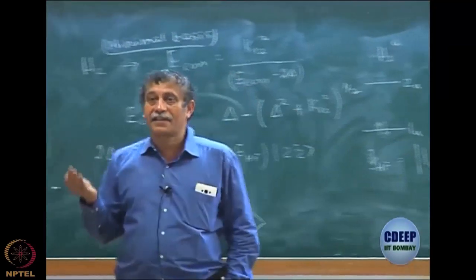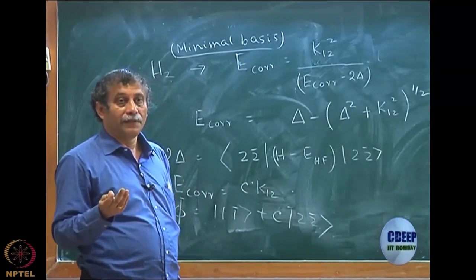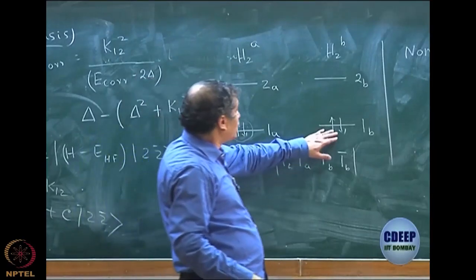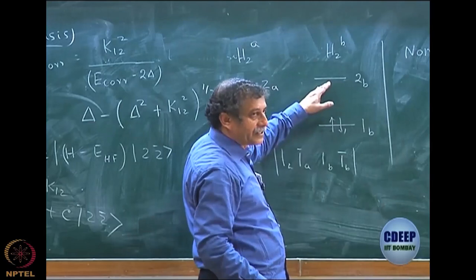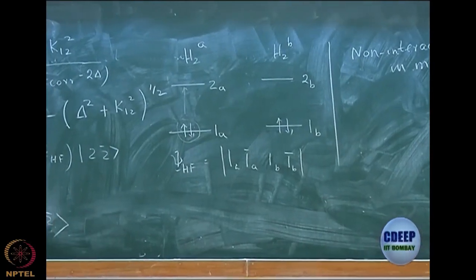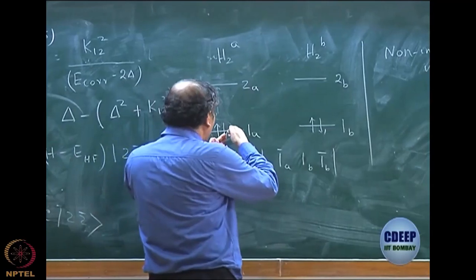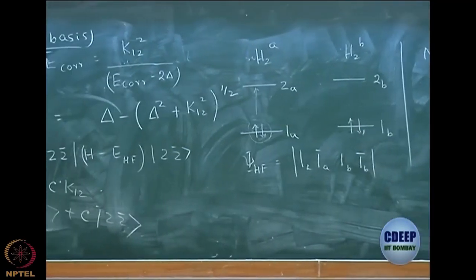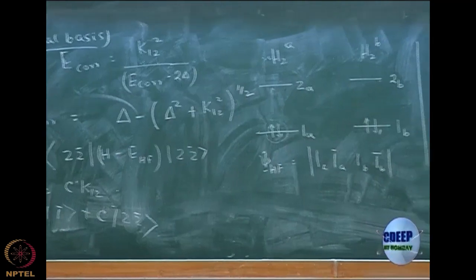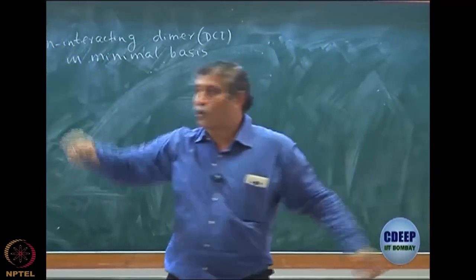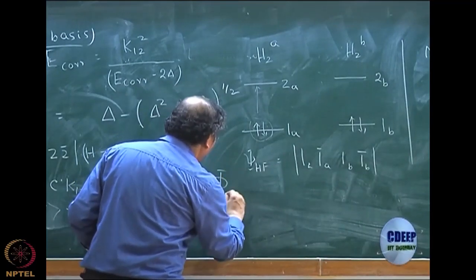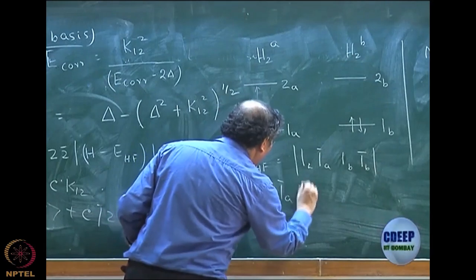Now I have to discuss what are the doubly excited configurations. How many doubly excited configurations are possible? These 2 electrons can be excited here, or those 2 electrons can be excited there, or 1 can go there, et cetera. But first, let us understand that since they are non-interacting, any interaction between monomer A and B is actually going to become zero — physically you cannot push an electron from one to the other because they are infinitely apart.